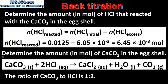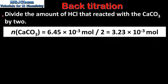Next we determine the amount in moles of calcium carbonate in the eggshell. From the balanced equation, the molar ratio of calcium carbonate to hydrochloric acid is 1:2, so we divide the moles of hydrochloric acid that reacted with the calcium carbonate by 2: 6.45 × 10⁻³ ÷ 2, which gives us 3.23 × 10⁻³ mol.